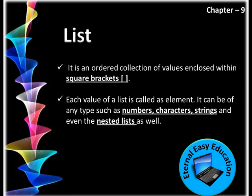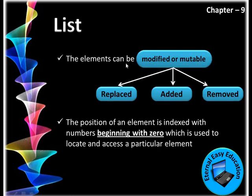To summarize: a list is a data type, it is a collection of values, it is enclosed within square brackets, and a list can have numbers, characters, strings, or even another list within it. Elements in a list can be replaced, added, or removed. The position of an element is indexed starting with zero, which is used to locate and access a particular element — the same procedure as in arrays.